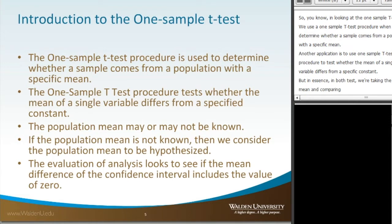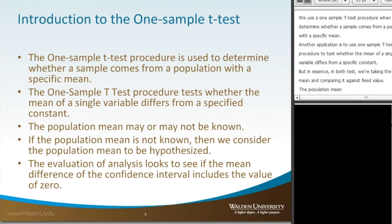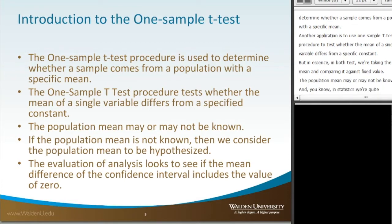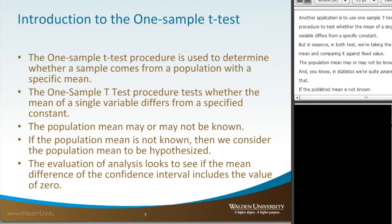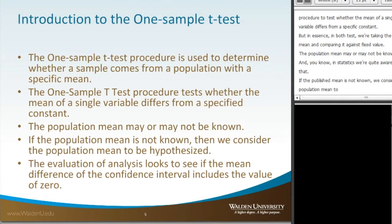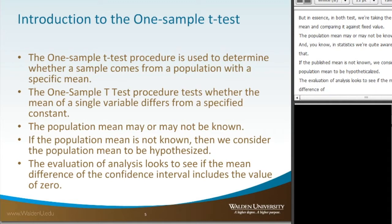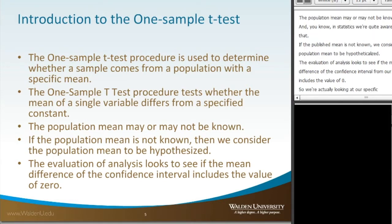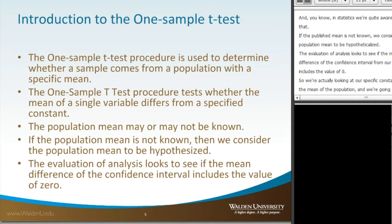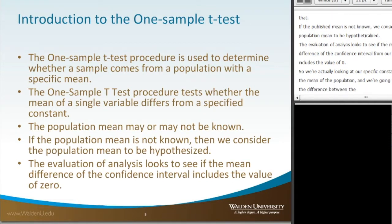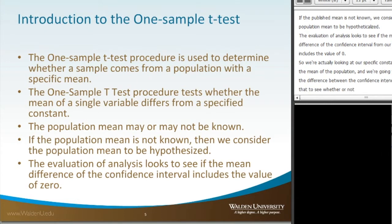The population mean may or may not be known. If the population mean is not known, then we consider the population mean to be hypothesized. The evaluation looks to see if the mean difference of the confidence interval from our sample includes the value of zero — looking at the difference between the confidence interval and that specific constant or population mean to see whether or not it includes zero.